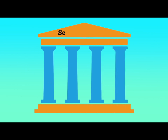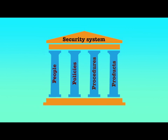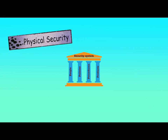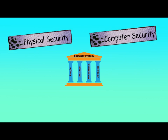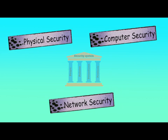It needs to be emphasized that people, policies, procedures, and products are the four pillars of any security system. Together, they provide the solution for providing physical security, computer security, and network security.